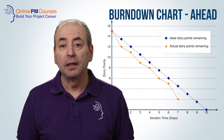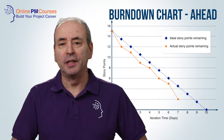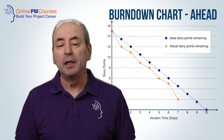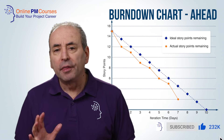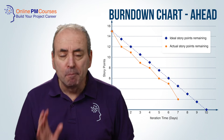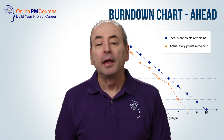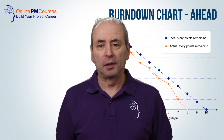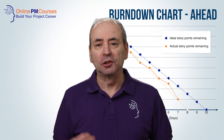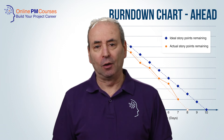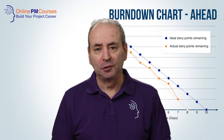If, on the other hand, actual progress lies below the ideal line, then we know that the team is ahead of schedule. This means that it may finish its backlog before the end of the cycle, and they may choose to go to the product owner to draw down another user story into the current backlog, so that they don't waste time during the cycle.